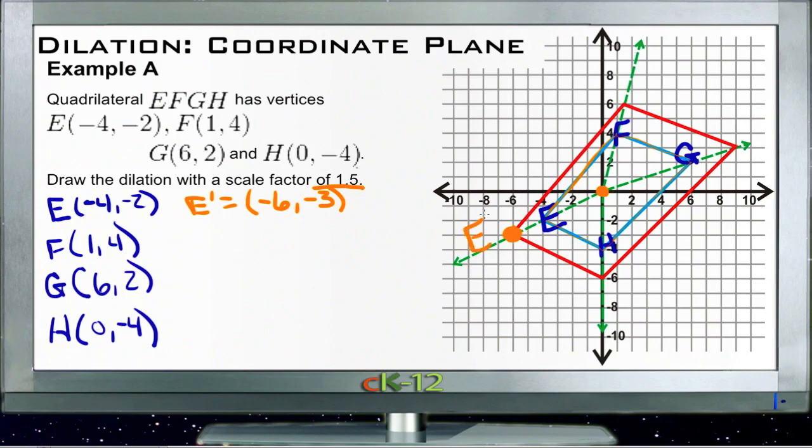And this point right here then is E prime. Then for F prime we go from (1, 4) to one point five times each of those, so F prime ends up right up here at our top vertice F prime. And then you can see during the multiplication out that G prime ends up over here of course, and H prime down here.